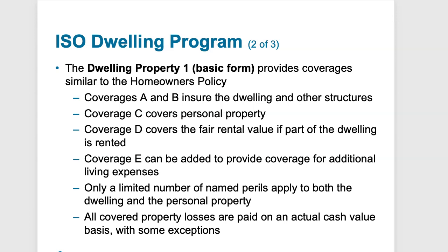Part B covers structures set apart from the dwelling by clear space, like a detached shed. Part C covers personal property inside the residence, usually up to 10% of the policy. Part D covers the fair rental value if there's a loss and part of the dwelling is uninhabitable — you can get money to cover the loss of rental income. Part E can be added as an endorsement to the basic form to provide coverage for additional living expenses. Only a limited number of named perils apply, and all covered property losses are paid on an actual cash value basis, with some exceptions.